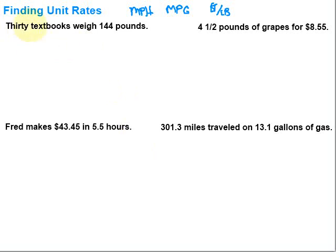Let's take a look at this first one. We've got 30 textbooks that weigh 144 pounds. What might be a good unit rate to figure out? It seems like I might want to know how much each of those books weighs. So we would want pounds per textbook, or do we want textbooks per pound? I'm going to say pounds per textbook — I want to know how much each one weighs. So that tells me how to set it up. I want pounds per textbook.